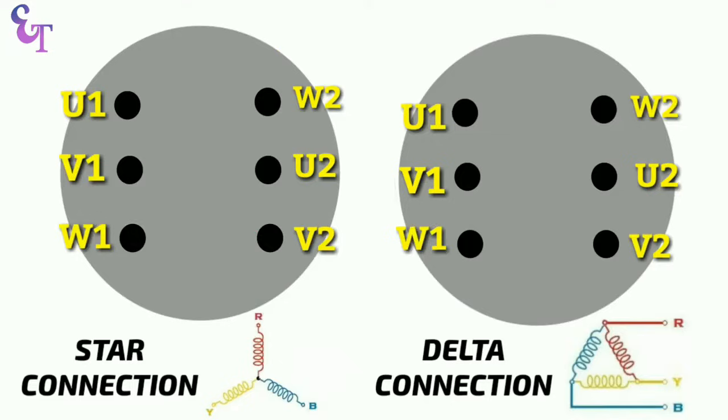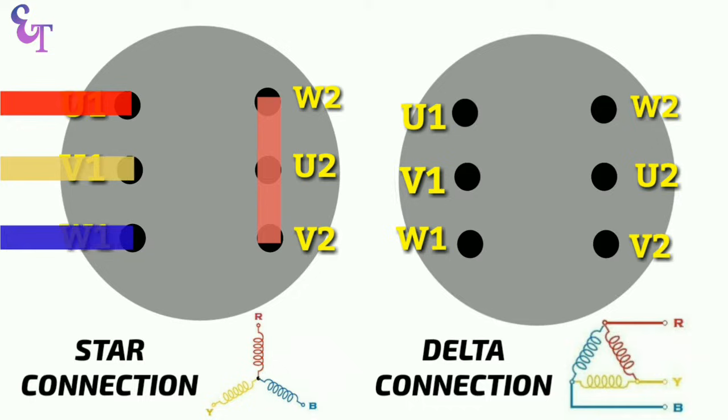If we want to run the motor in star connection then W2, U2 and V2 we short these terminals. Now with U1, V1 and W1 terminal if we connect phase supply then our motor starts running.